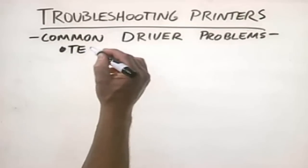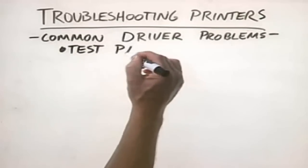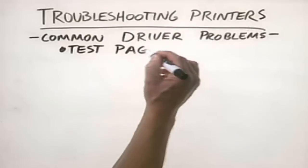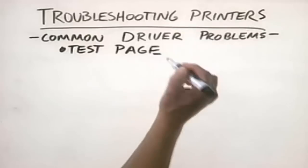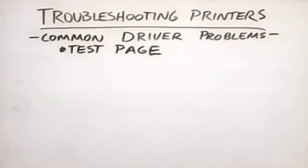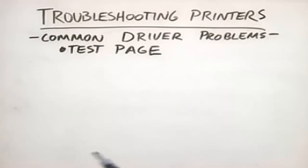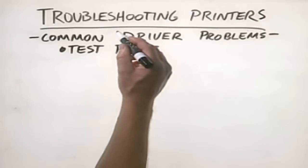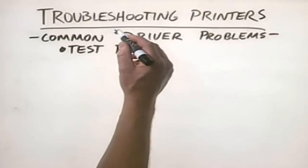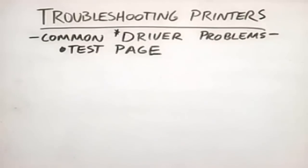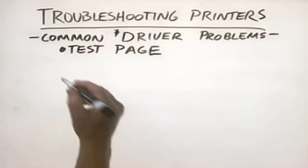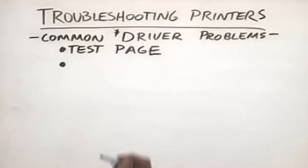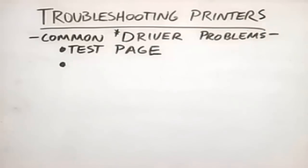If you've identified that the printer itself mechanically seems to be working fine — the cable's fine, the printer can print a test page — then you need to start looking at printer driver problems. The first thing to do is try printing a test page from within Windows. If the test page fails to print or prints incorrectly but the printer itself is fine, that's a pretty good sign you've got a problem with a printer driver.